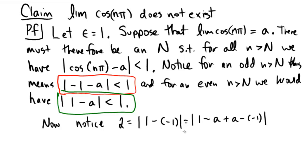By the triangle inequality, we would now get the absolute value of 1 minus a right here. And then on this other side, we would have an absolute value of a minus negative 1. A minus negative 1. A minus negative 1.